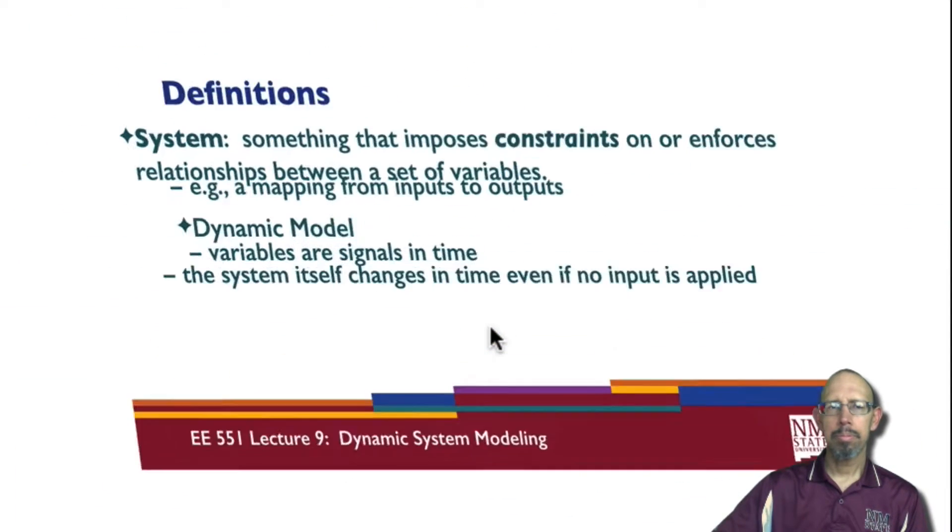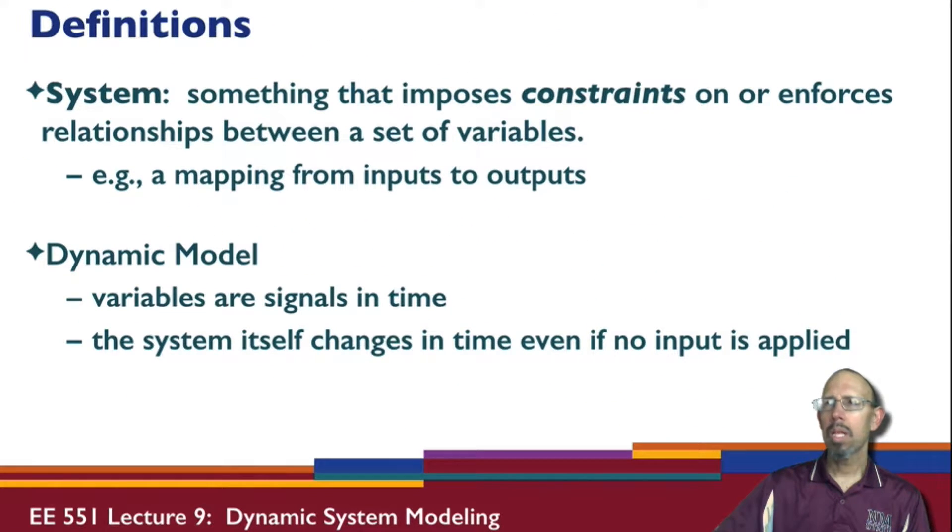In terms of systems, you have some definitions. A system is something that imposes constraints on or enforces relationships between a set of variables, for example, something that takes some inputs, does something to it, and then provides outputs.